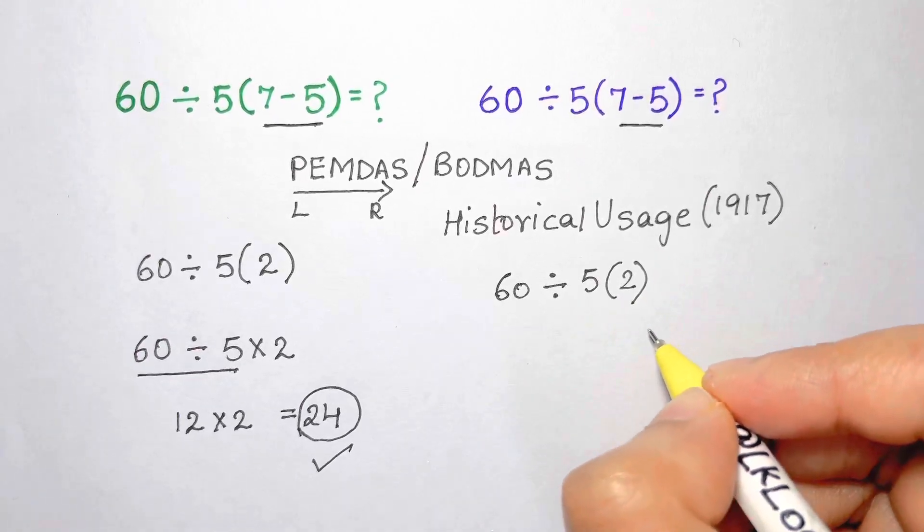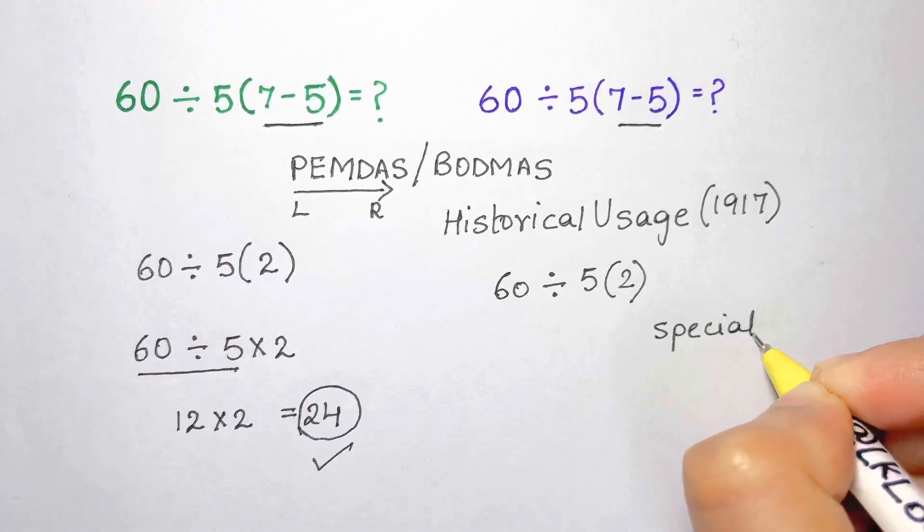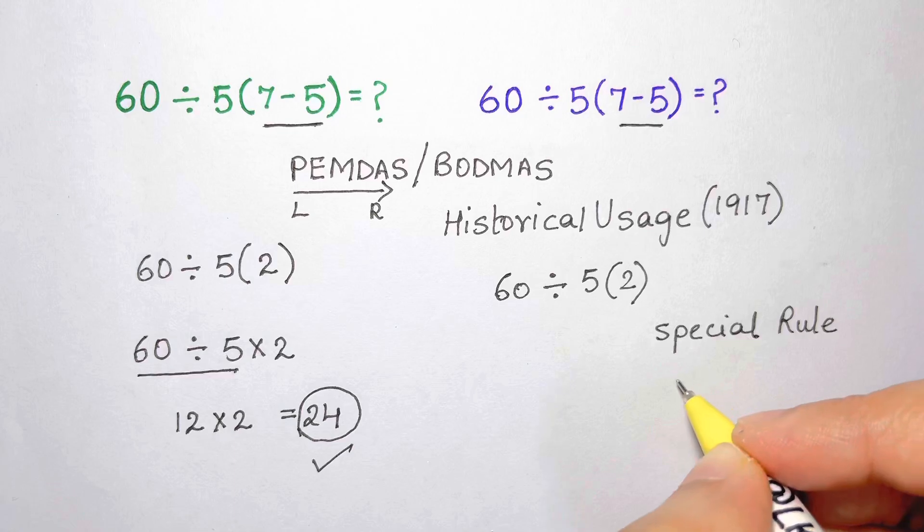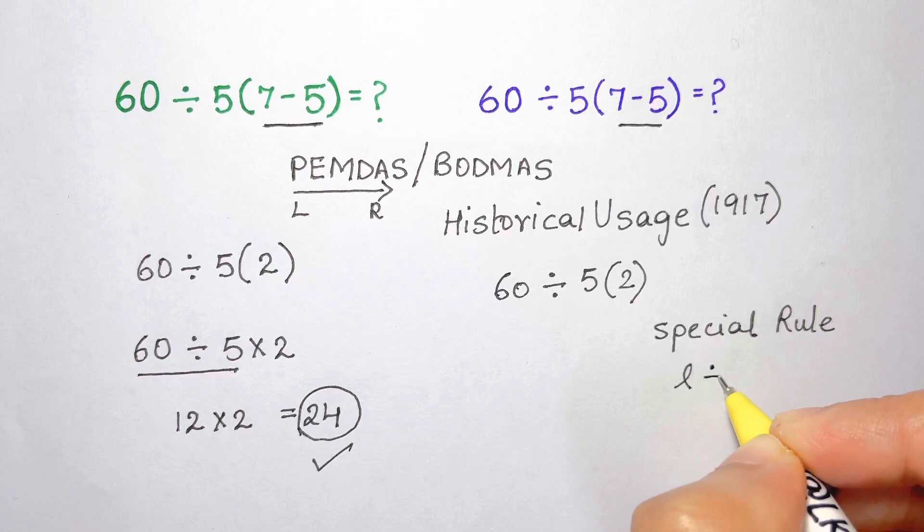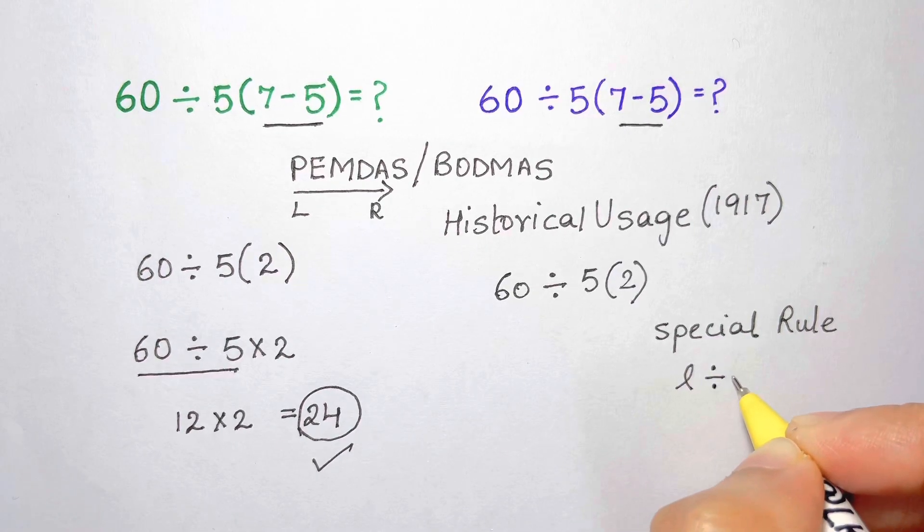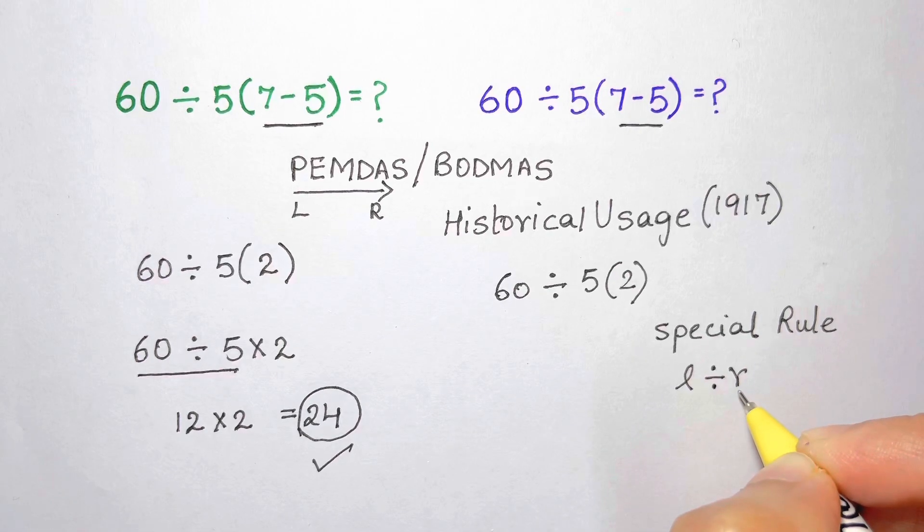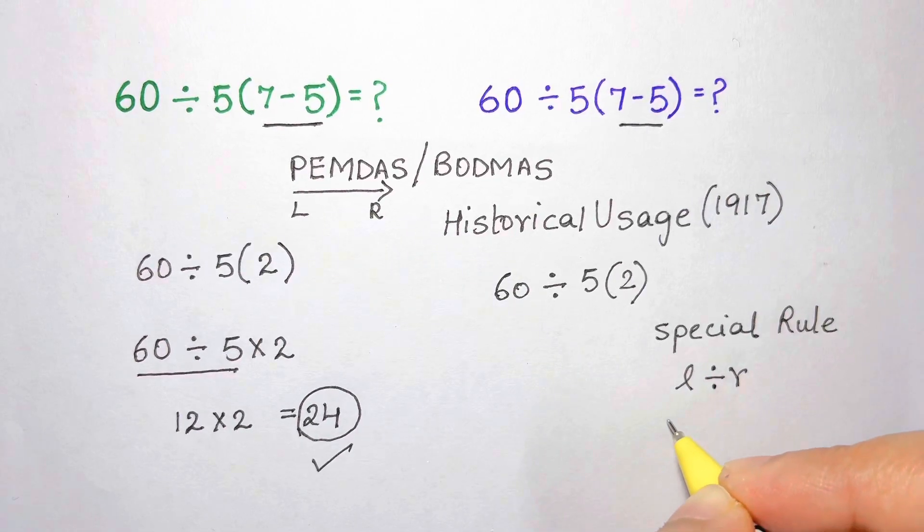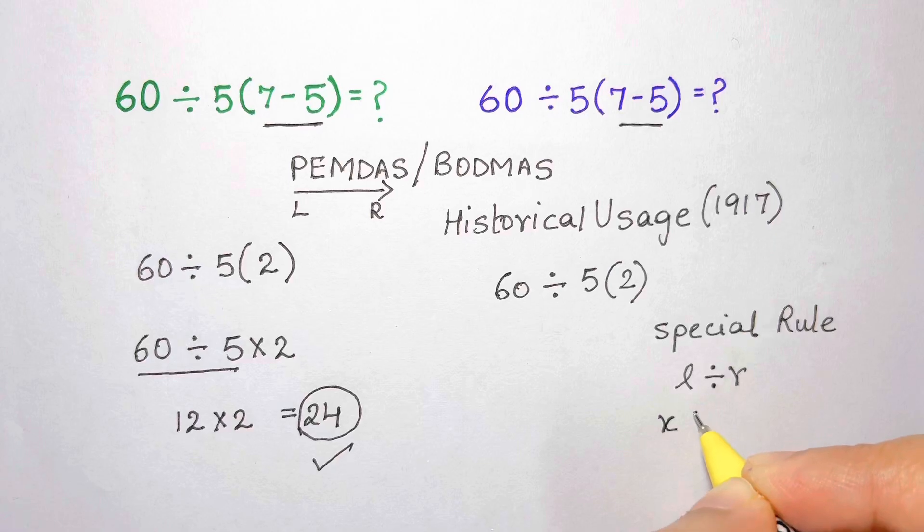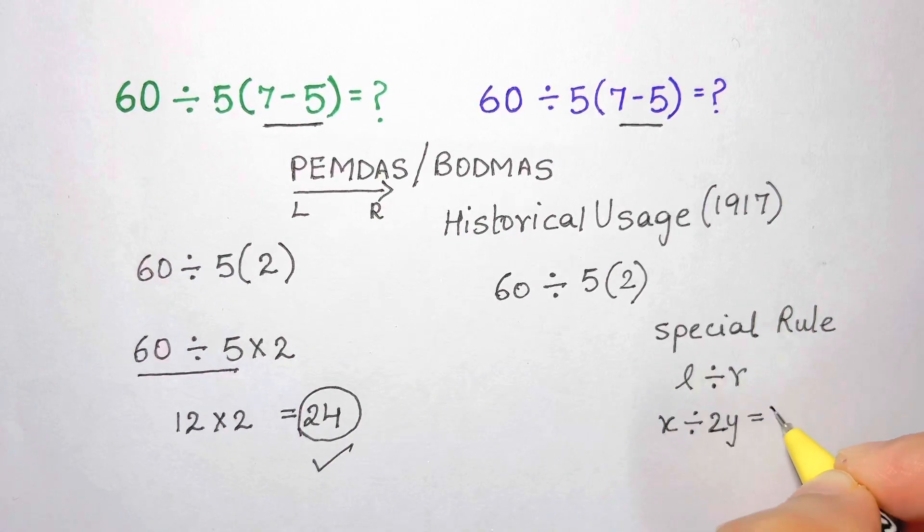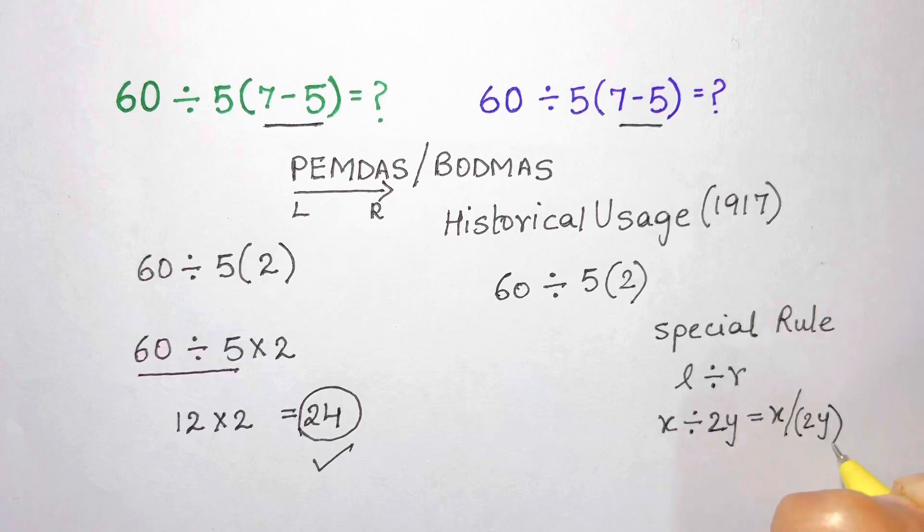The special rule about the division symbol is that you evaluate everything on the left and divide by everything on the right. That is, you want to divide the entire product on the left by the entire product on the right. For example, if a textbook wrote x divided by 2y, which equals x over 2y in parenthesis.